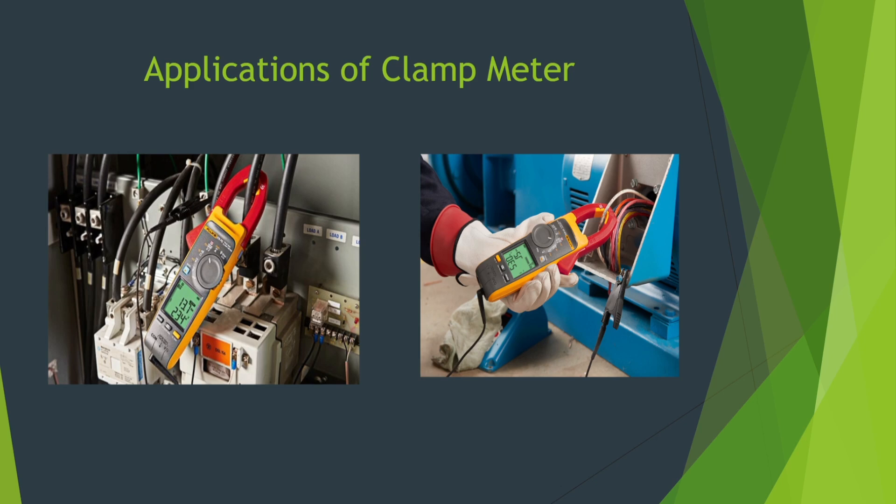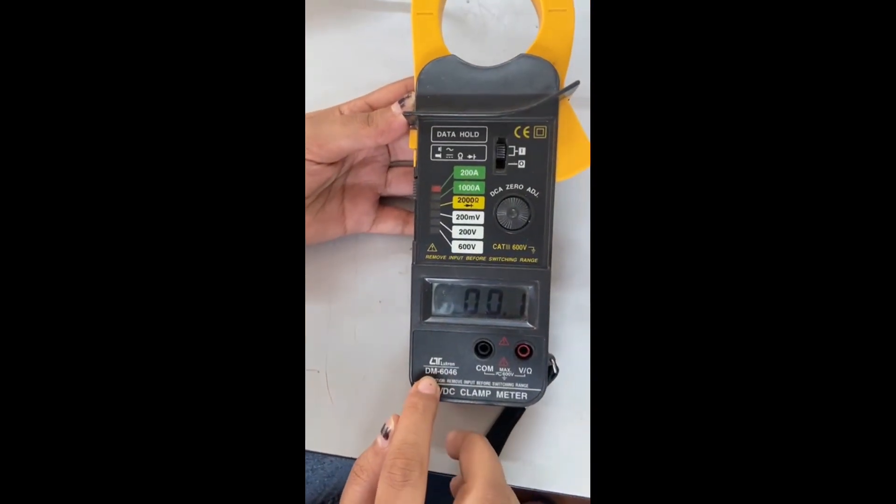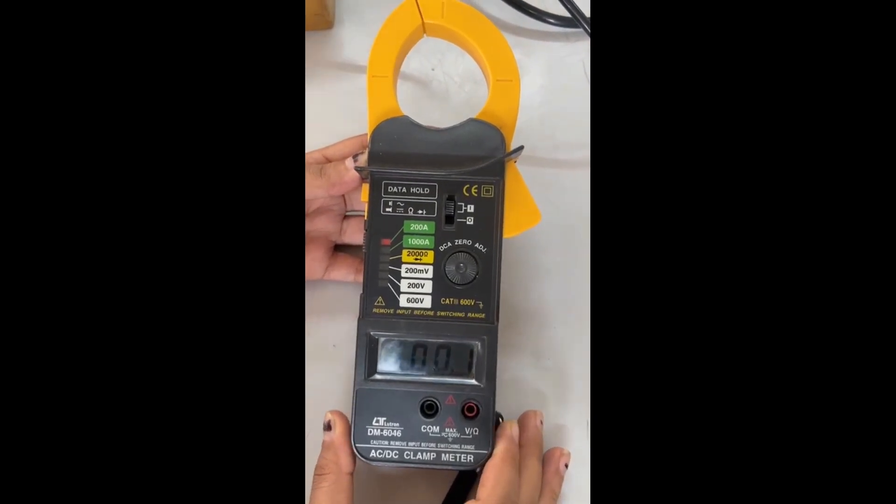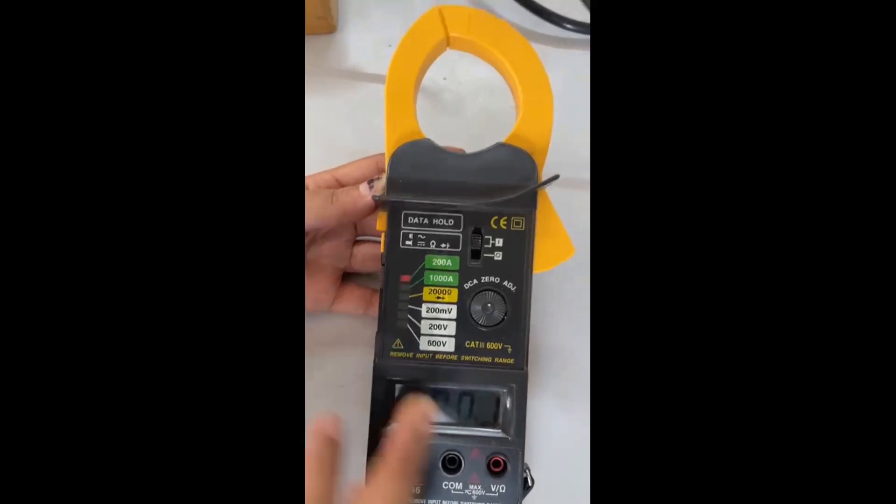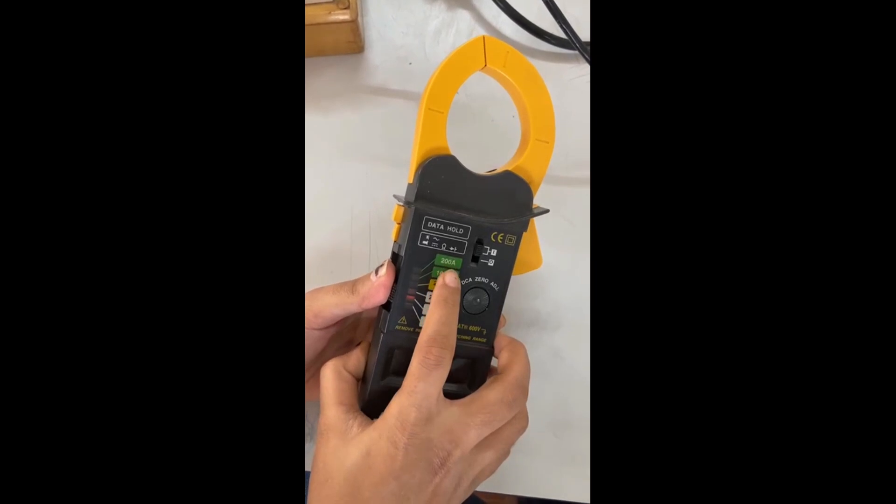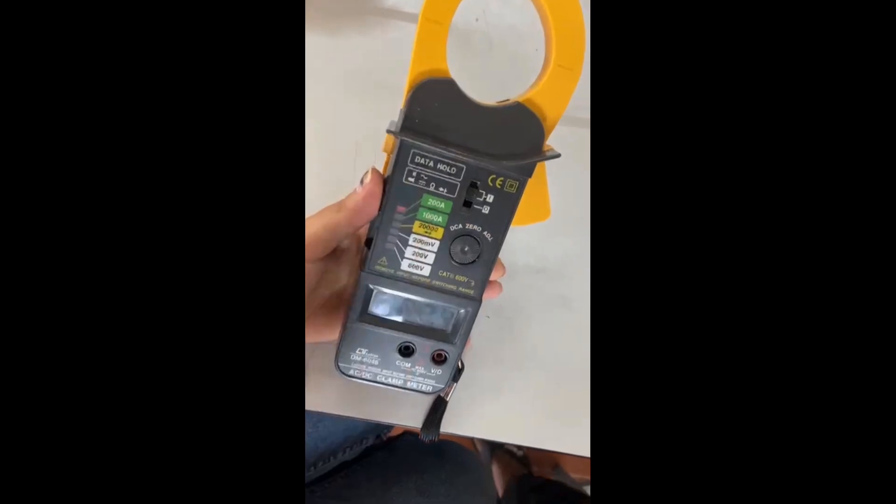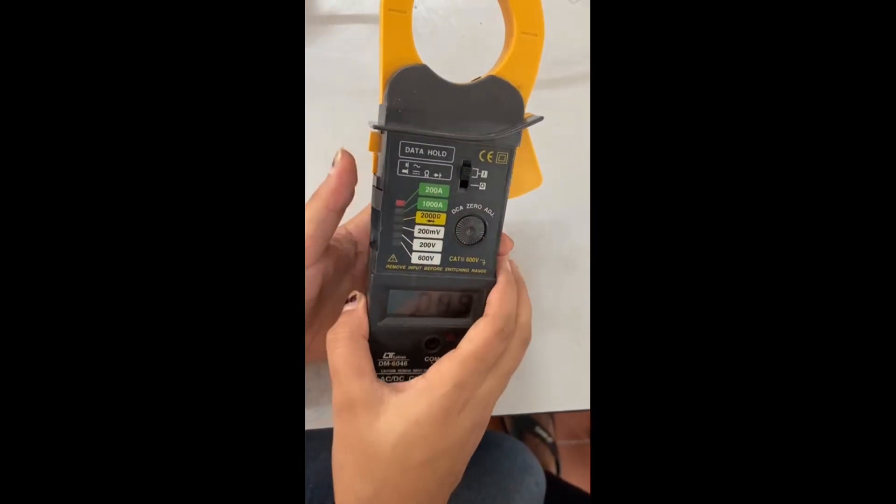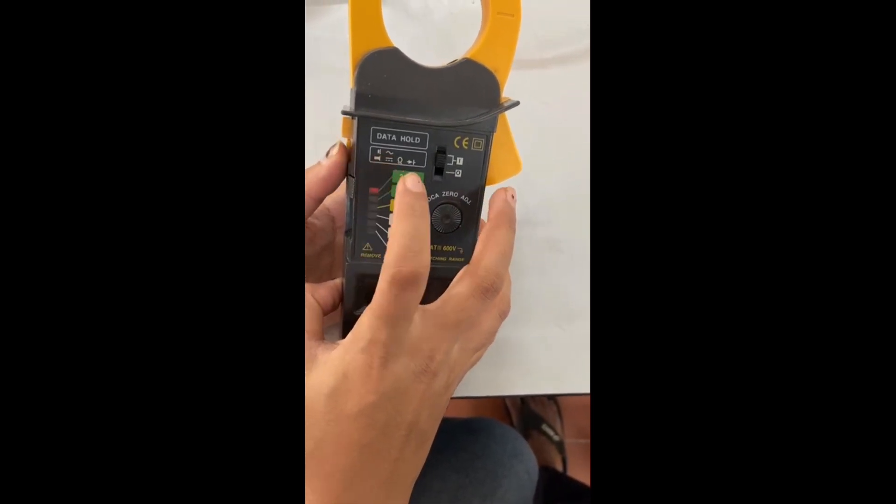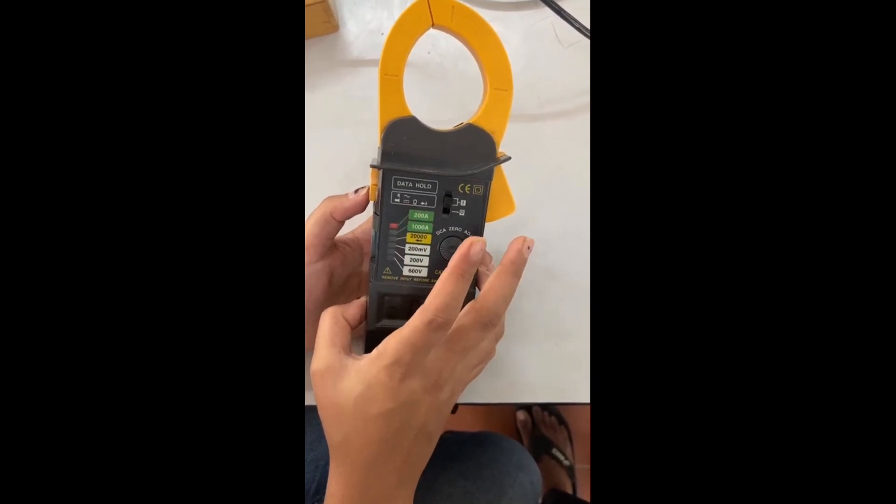Let's see a demonstration video of how to use clamp meter of brand Lutron whose model number is DM6046. We are going to demonstrate how to measure various parameters that are given on the meter. Let's start with current. So to set it on current we will use this slider to set it on different limits. We will set it on 200 amperes for our setup. This yellow button here is used to change the mode of the clamp meter. There is AC mode and there is DC mode, diode mode. So we will press it like this to set it on AC.